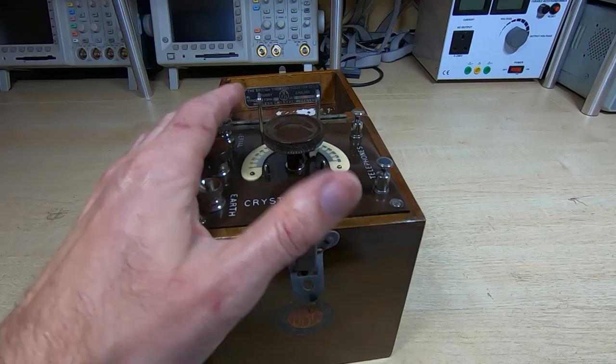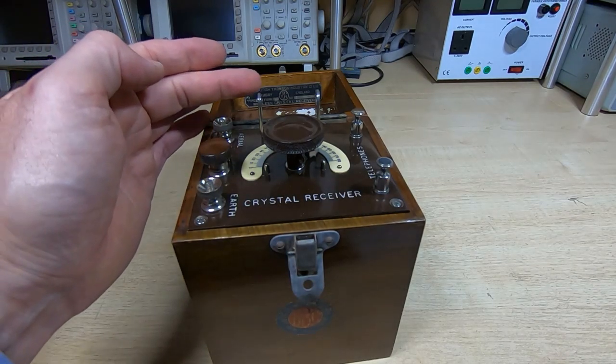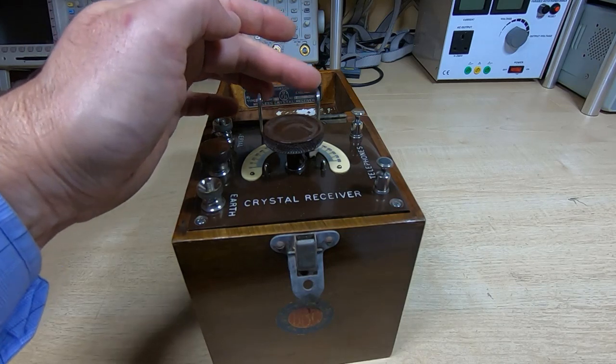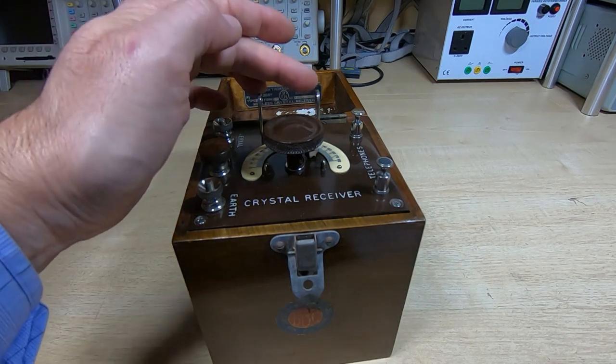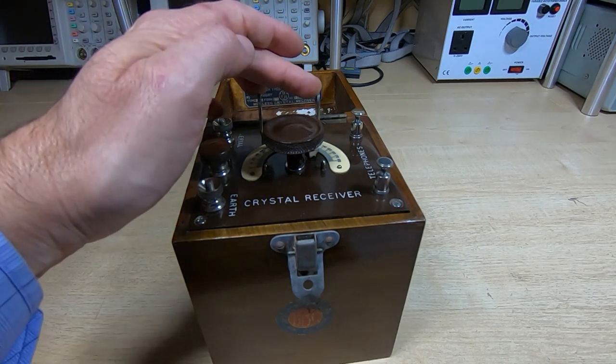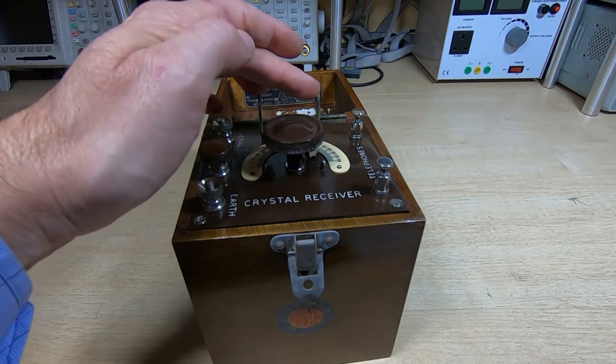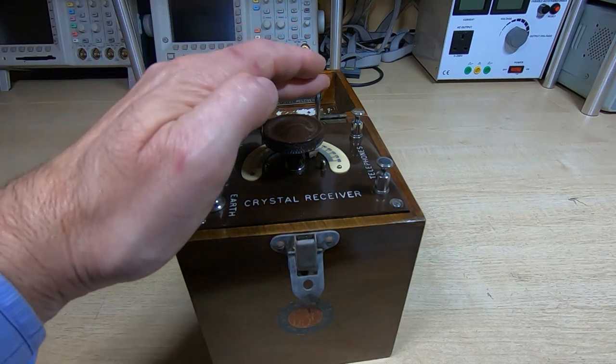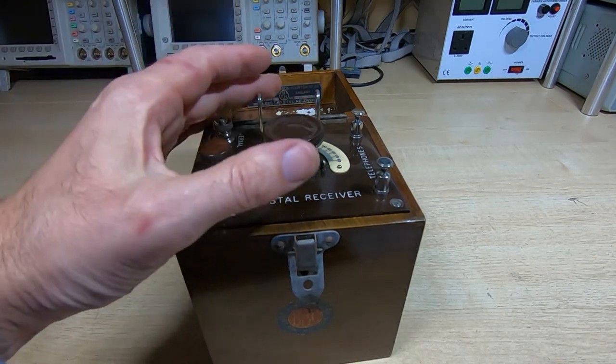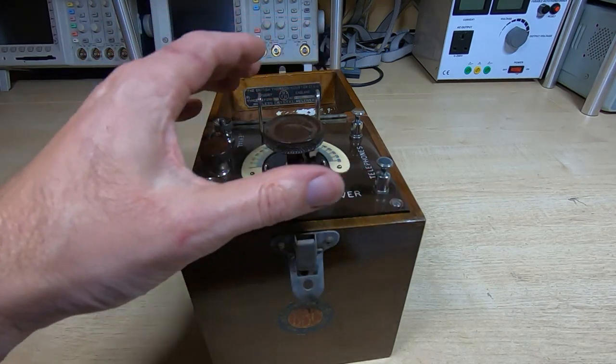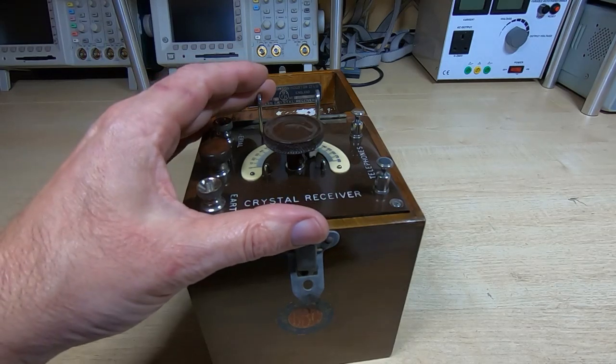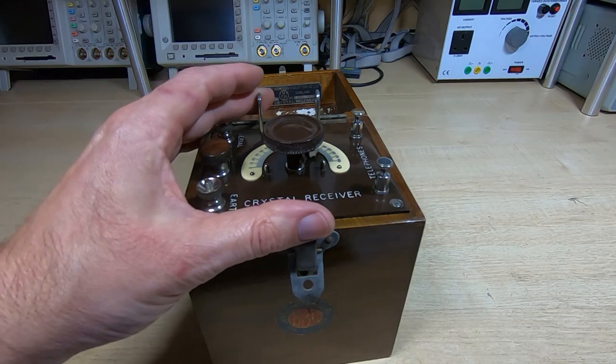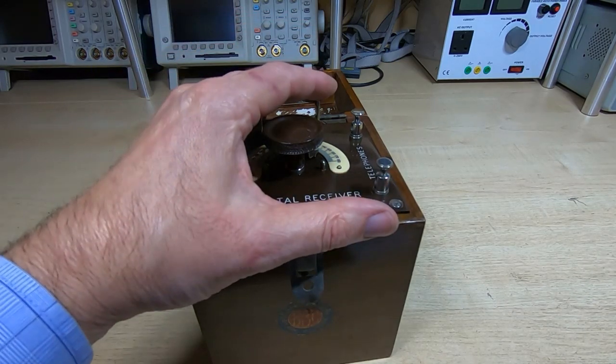This is a crystal set with no active parts unless you include the cat's whisker, which as you can see is not here unfortunately. I don't have one so I'm on the lookout. I may have to manufacture a replacement using a bit of crystal.